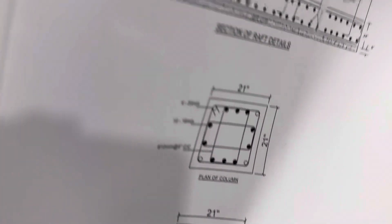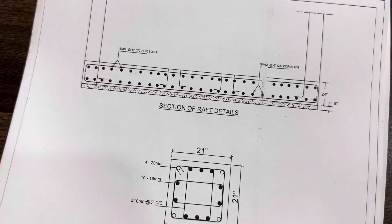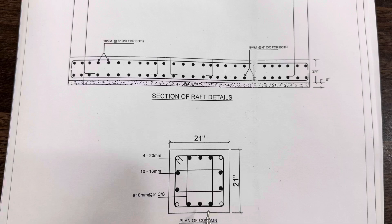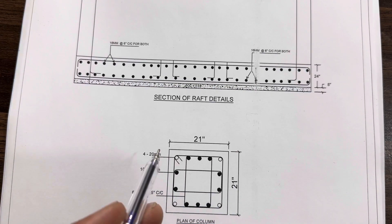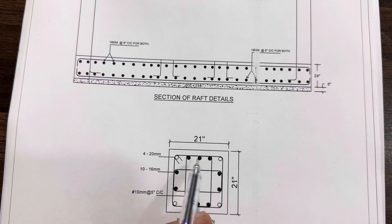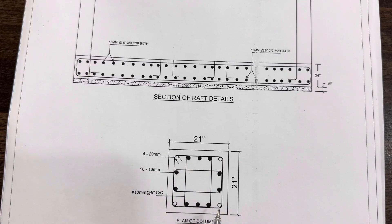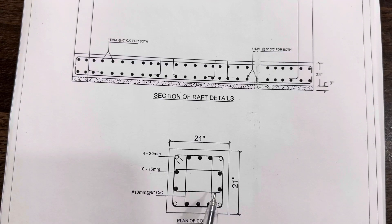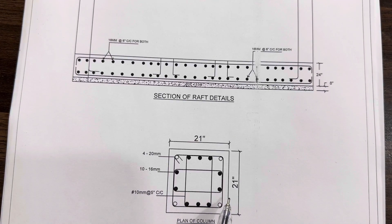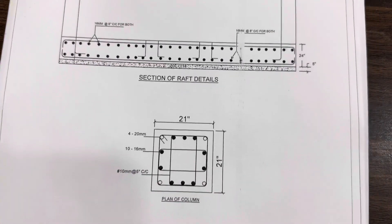First of all, I will tell you the size of column which is 21 inch by 21 inch. Inside we have steel rods - you can see 1, 2, 3, 4, 5 at this side, 5 at this side, so total 10 numbers and 4 other side bars. So this is 14 numbers of steel reinforcement. Size of the column is 21 by 21 inches.